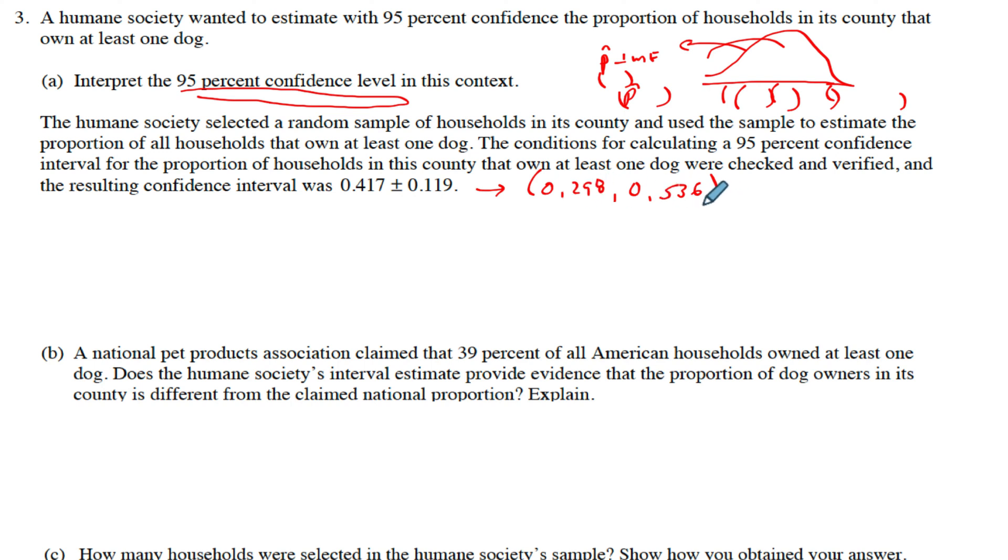Here's just one interval that we constructed. It either contains the true proportion or it doesn't. What you don't want to say is there's a 95% chance it contains the true proportion. The true proportion is what it is, it doesn't move at all. What changes are these intervals that we construct. If we were to construct lots of intervals, 95% of them would actually contain the true proportion and then 5% would not.